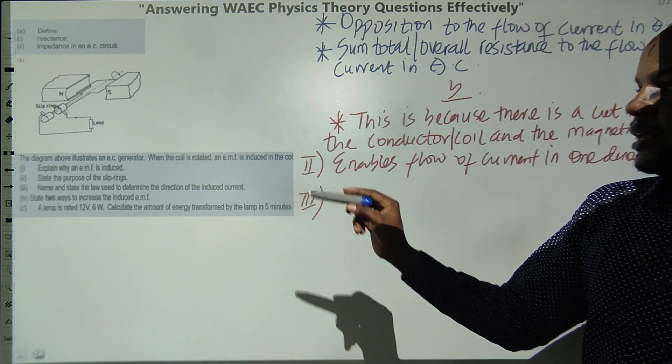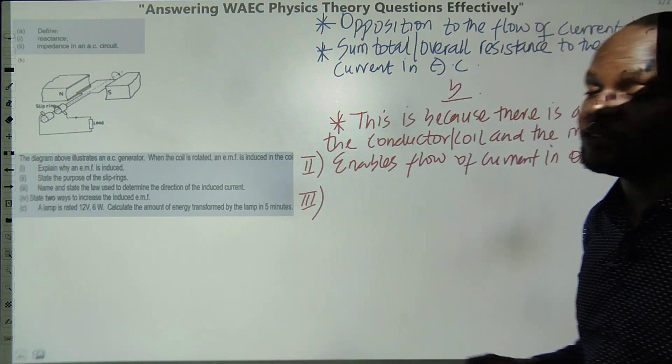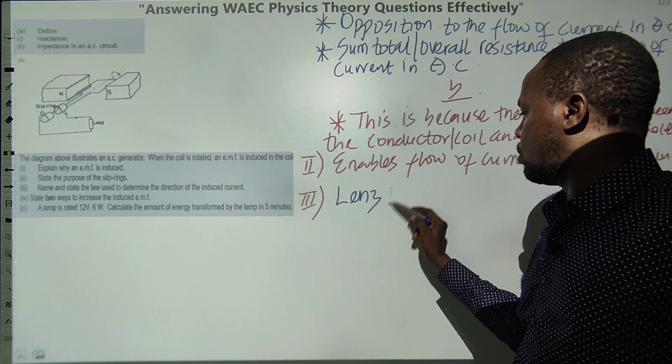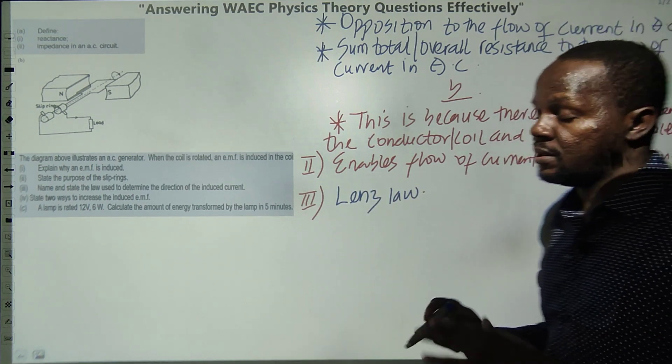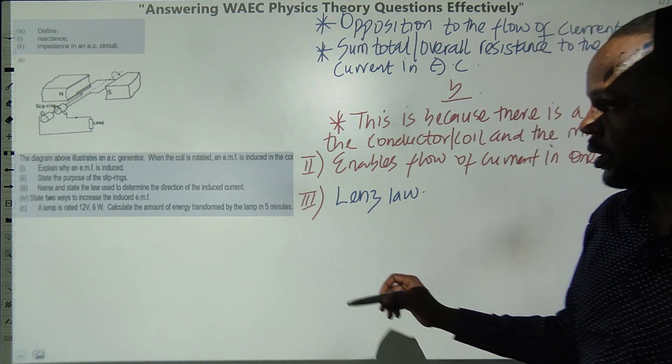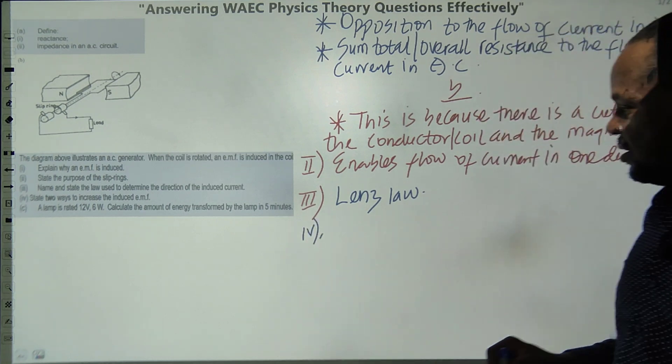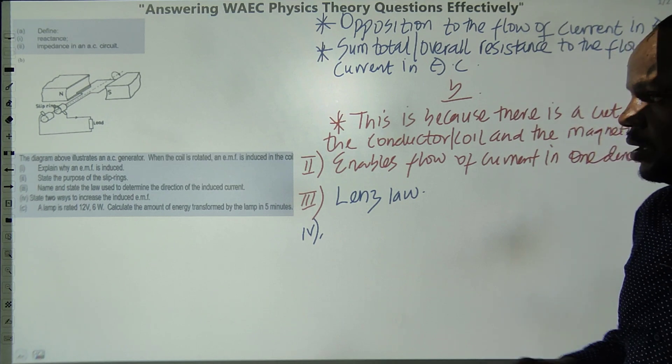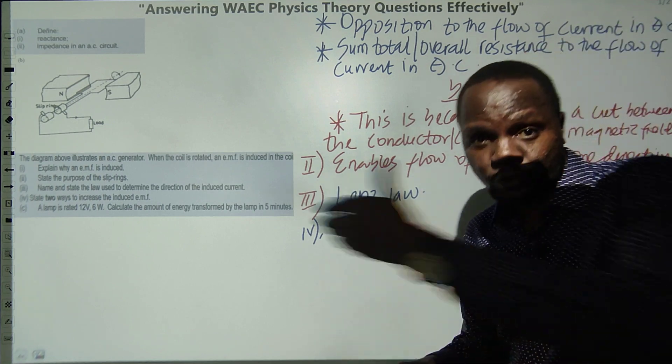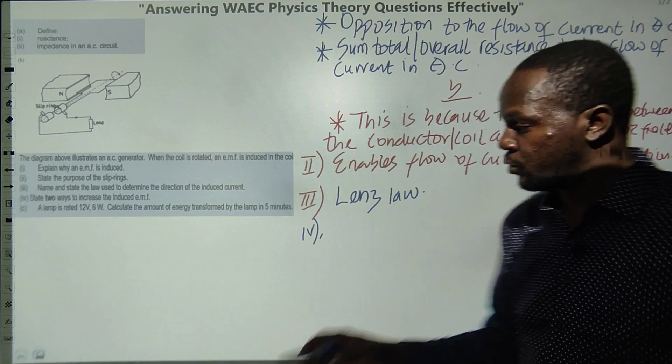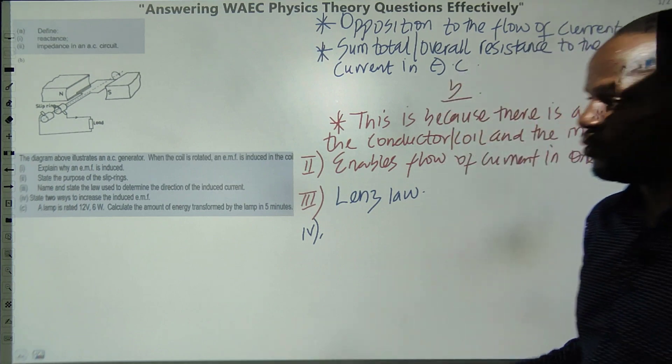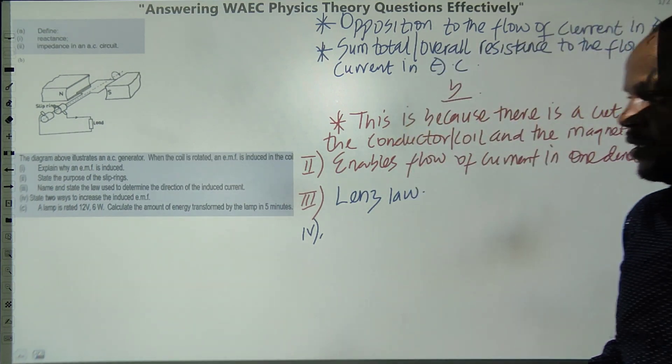Next one: name and state the law that is used to determine the direction of induced current. The second law, which we call Lenz's law, is used to determine the direction of induced current. It states that the direction of induced current always opposes the change producing it. It's also known as the law of conservation of energy. The next one says state two ways to increase the induced EMF.